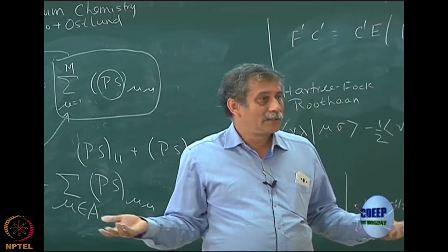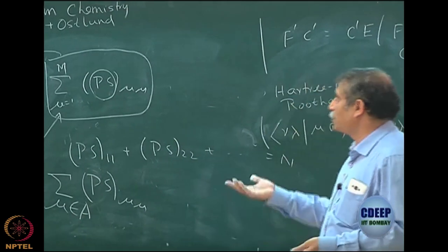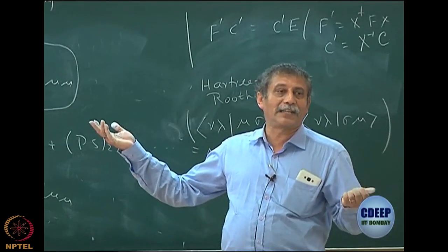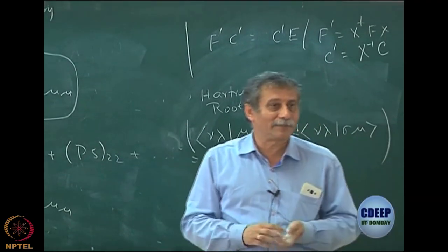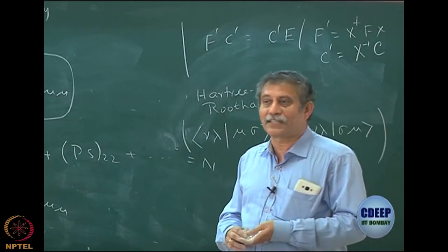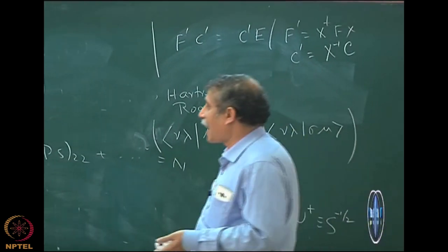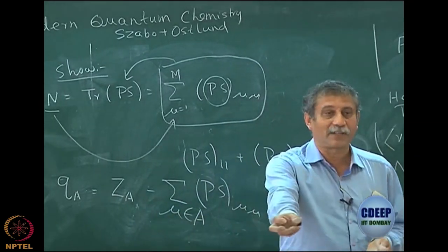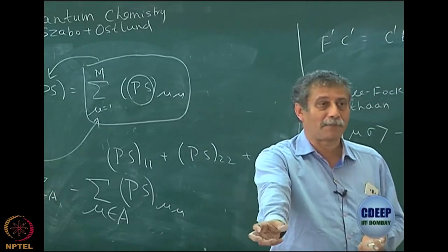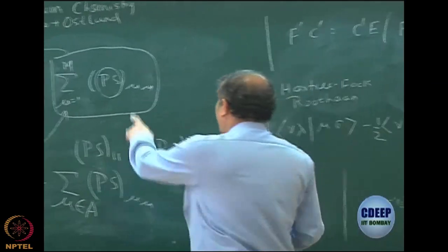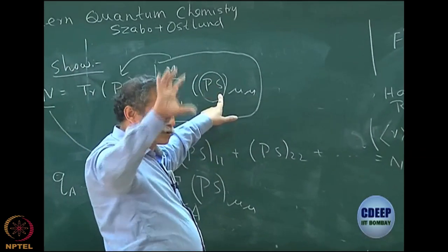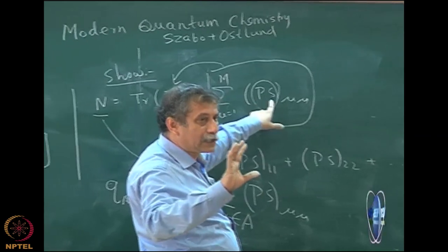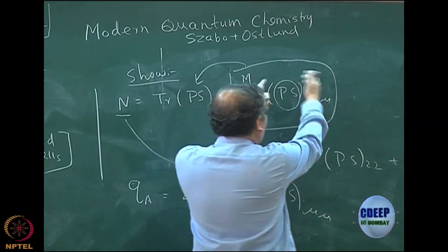This is Mulliken population analysis. All right — very nice, except now I will tell you some stories showing this is not the only way to do it. I can keep telling you any number of results and you have to believe that number, and that is why population analysis is arbitrary — because there is actually no experiment to verify what the charge of oxygen in a water molecule is.